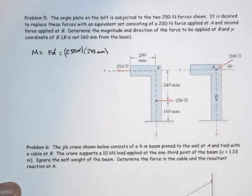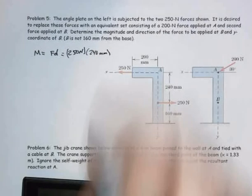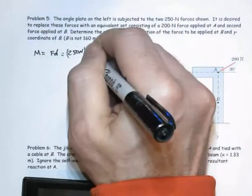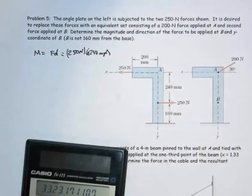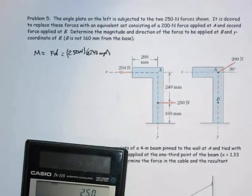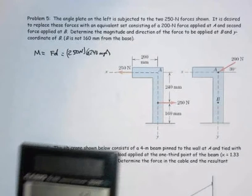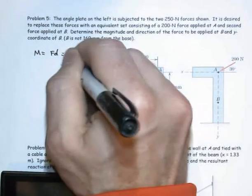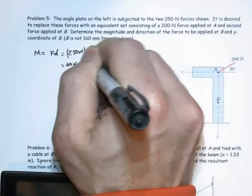And so if you don't want to have big numbers there you might just go and make this a meter. So 250 times 0.24 is equal to 60 Newton meters, and again in a counterclockwise fashion.